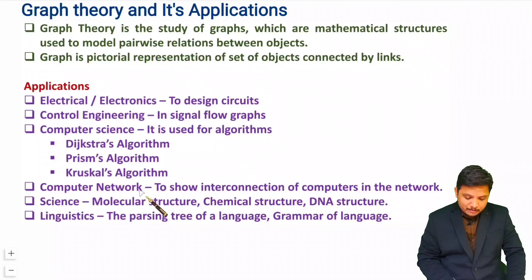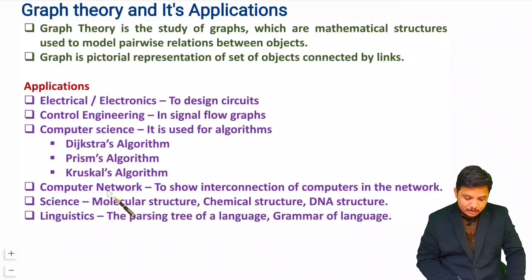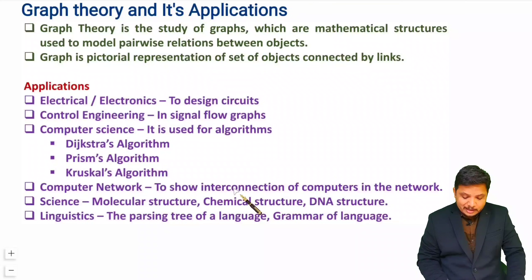In computer networks, graph theory is used to show interconnections between computers. In network simulators, computers are connected to each other and bandwidth or data rate associated with each computer can be simulated. It is also used to identify network speed between two nodes, find possible paths, and detect and correct errors.